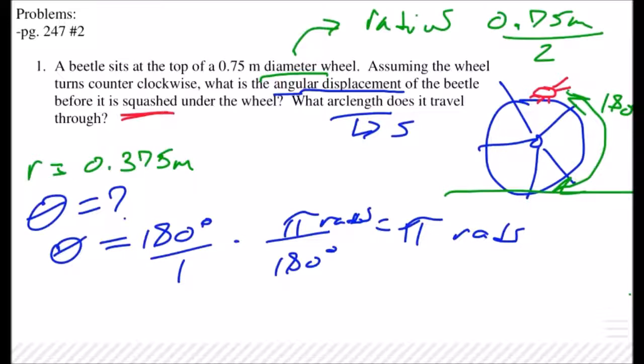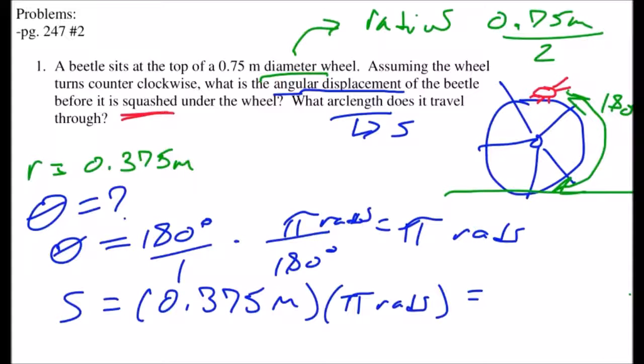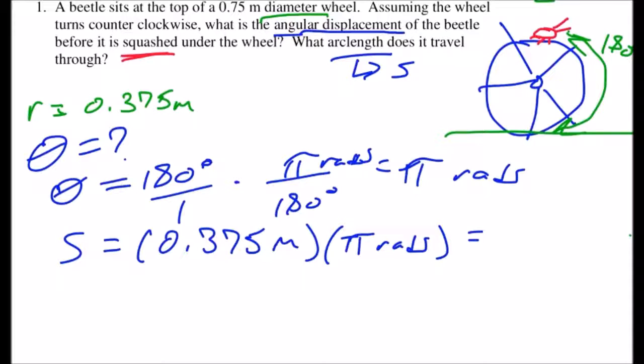All right so we're going to say that s, the arc length, is equal to what's my radius? Good, 0.375 meters times π radians. All right so type that into your calculators and let's come up with the arc length, or in other words the linear distance through which that beetle is going to travel.